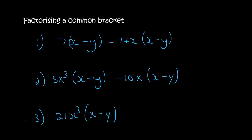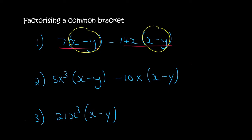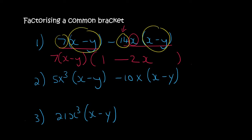So what we can see here is that x minus y is common. Then 7 and 14 — well 7 can go into both of those. So we take out 7 as well as x minus y. In the first term there's nothing left, so we're going to say 1 minus. There's still a 2 from 14, and then this x is still there — so that's the answer for that one. In the second one there's x minus y, which is common. There is an x here and an x there, and the number 5 can go into 5 and 10. So we're going to take out 5x and x minus y.